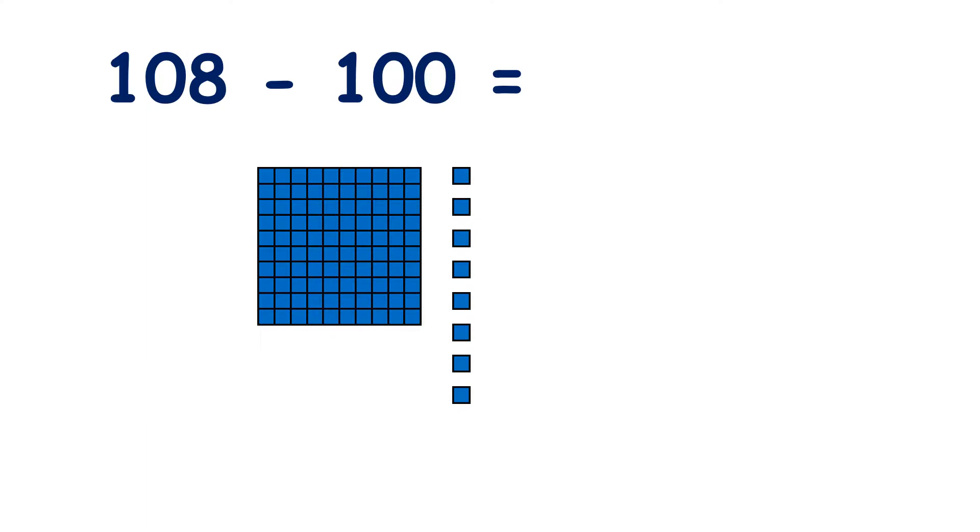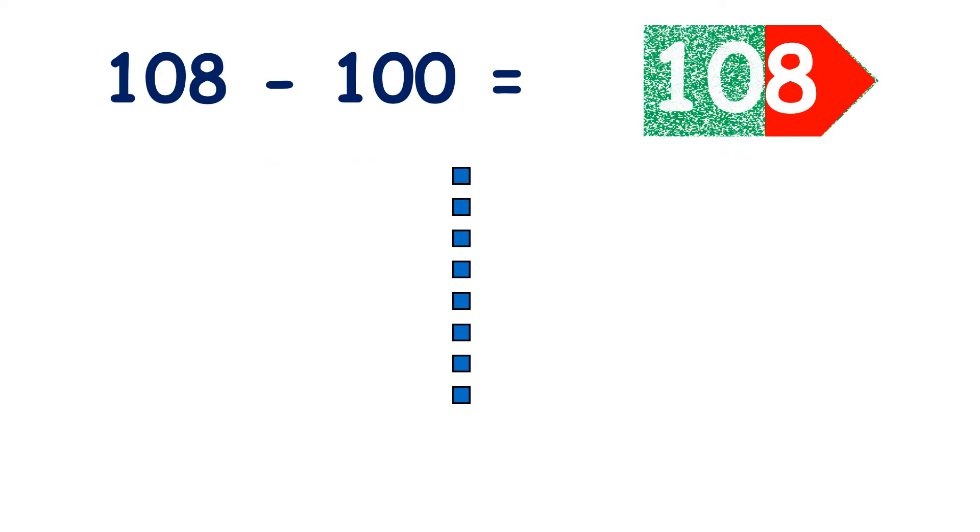Now we have 100 and 8 units, so we have 108. If we take away 100, now we only have 8 units, so we have 8.